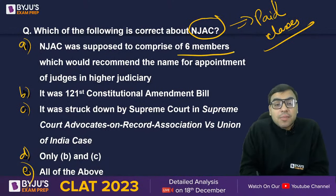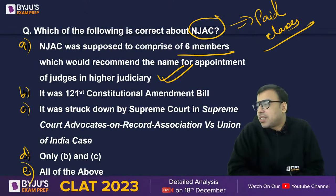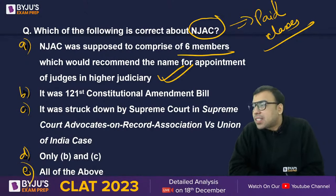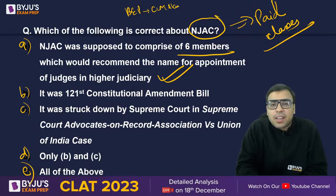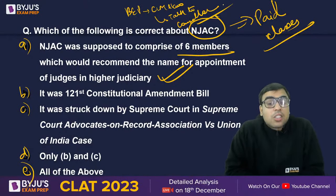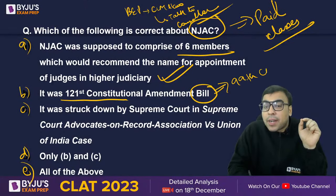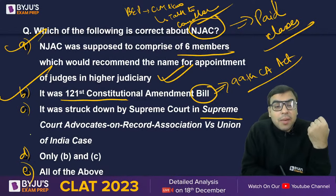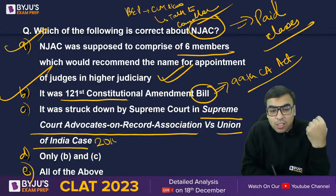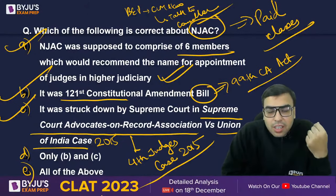NJAC was supposed to comprise six members, which would recommend names for appointment of judges in higher judiciary. It was the 121st Constitutional Amendment Bill; when passed, it became the 99th Constitutional Amendment Act. It was struck down by the Supreme Court in the Supreme Court Advocates on Record Association versus Union of India case, 2015 — also called the Fourth Judges Case. It was struck down four to one, with Justice Chelameswar as the only dissenting judge.